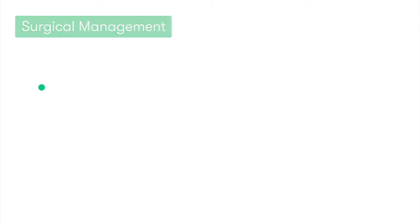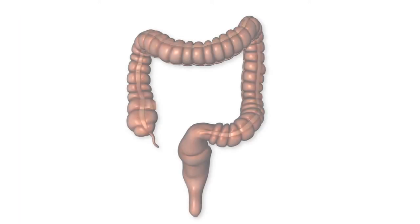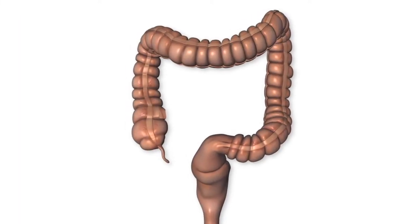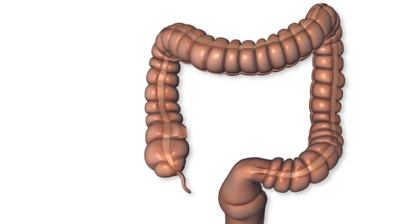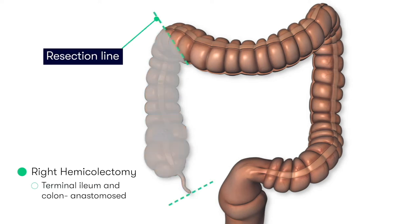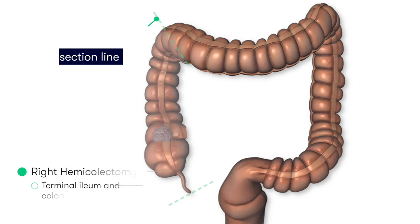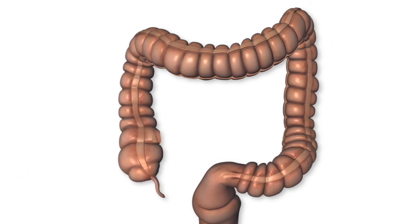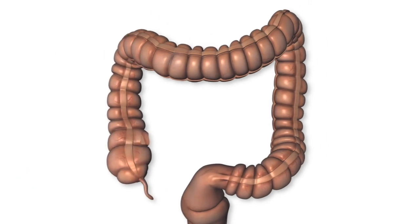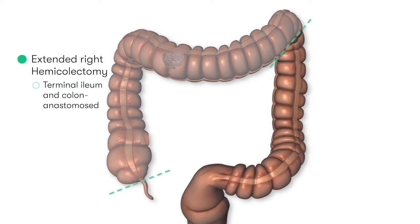In those patients who have a cancer in the cecum, ascending colon, or proximal transverse colon, we'd perform a right hemicolectomy. In those patients who have a more distal transverse colon cancer or a splenic flexure cancer, we'd undertake an extended right hemicolectomy.